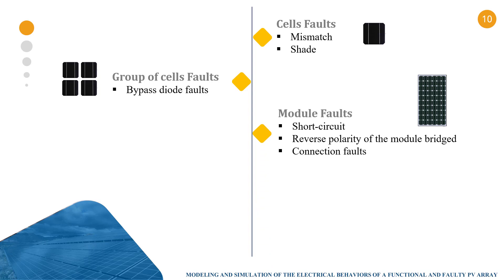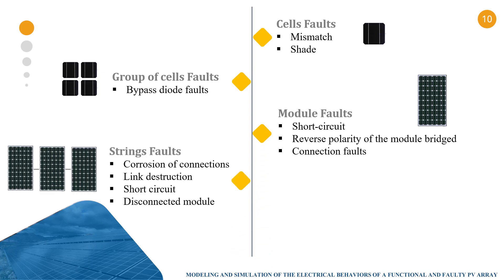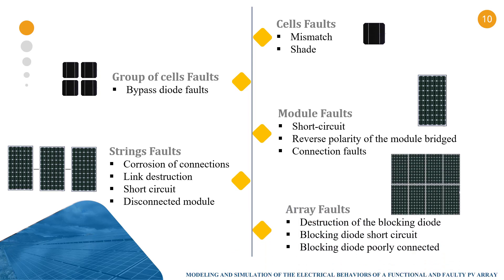In modules, we can have short circuit, reverse polarity or connection faults. In a string, we can have corrosion of connection, link destruction, short circuit or disconnected module. In an array, we can have destruction of the blocking diode, short circuit or blocking diode poorly connected.